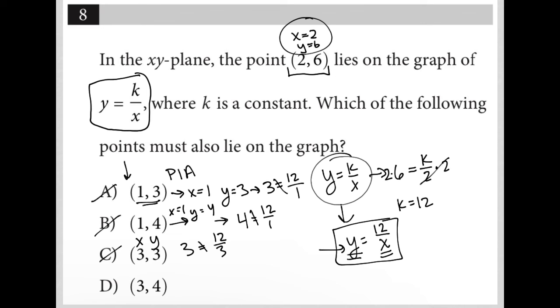Choice D must be the correct answer, but let's test it to make sure. x is 3, y is 4. Using y equals 12 over x, I'd have 4 equals 12 over 3. Yes, that is absolutely true. And that's why choice D is the correct answer to this question.